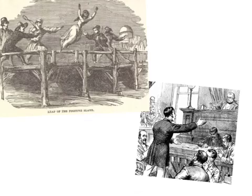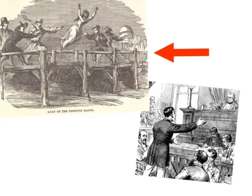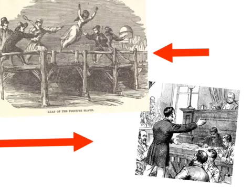Many northern states enacted legislation to protect free Black Americans as well as runaway slaves who could otherwise be abducted, then brought before court without the ability to produce a defense, and subsequently lawfully enslaved. These laws became known as personal liberty laws.